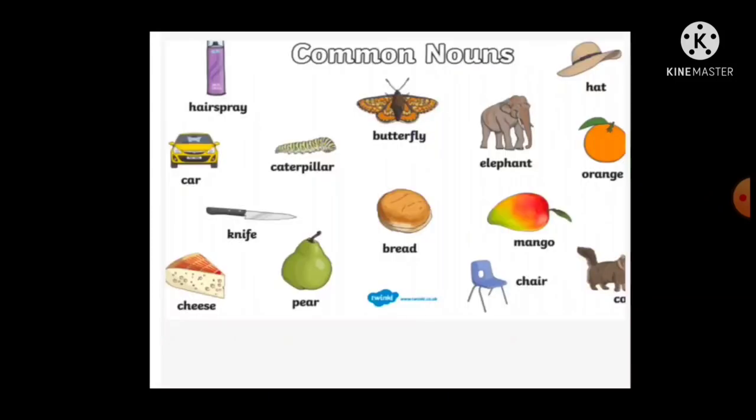What is a noun? A noun is a naming word. Common noun: it is a name given in common to any person or a thing belonging to a group.